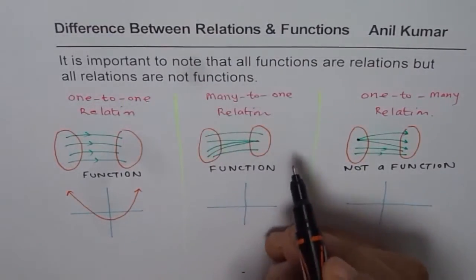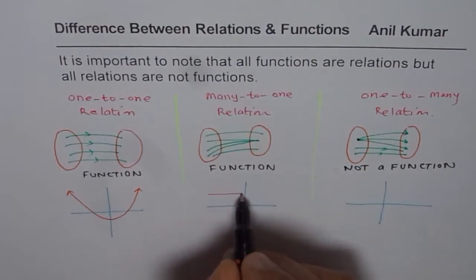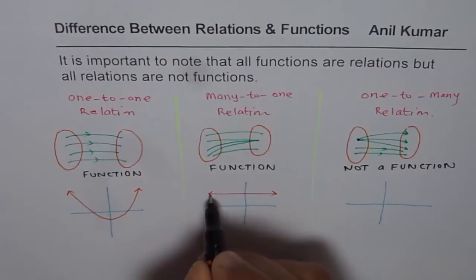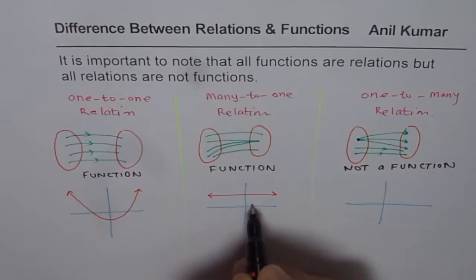Many-to-one. A horizontal line is a good example. Many-to-one, all x-values have only one y-value. This is many-to-one.